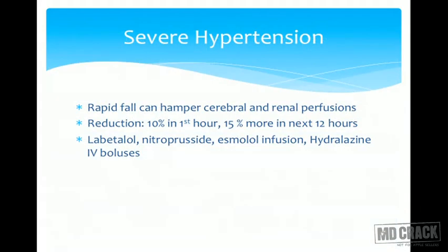If hypertension is long-standing, blood pressure must be brought down gradually — sudden fall in blood pressure compromises renal and cerebral circulation. The fall in the first hour should be only 10 percent, with an additional 15 percent fall brought about in the next 12 hours. Four drugs used in IV infusions or boluses for severe hypertension are labetalol, nitroprusside, esmolol in infusions, and hydralazine in IV boluses.